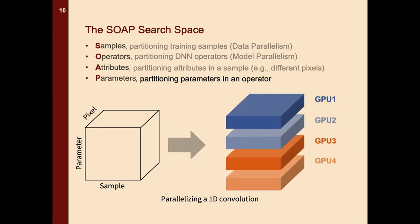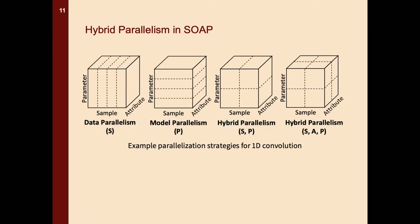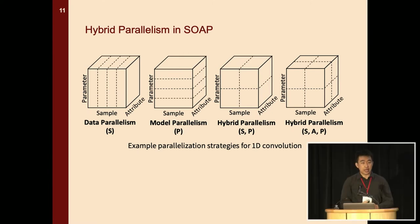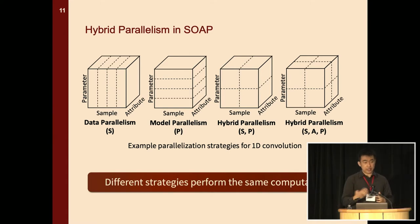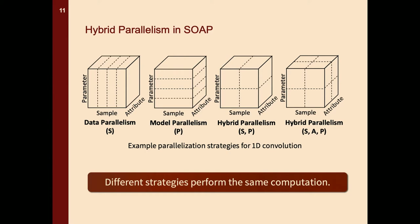The last dimension is the parameter dimension, which partitions parameters within an operator on different GPU devices. As a result, different GPUs end up computing gradients for disjoint subsets of parameters, which can help you avoid parameter synchronization. In SOAP, we also consider hybrid parallelism using any combination of the SOAP dimensions. In our design of the SOAP search space, it is guaranteed that different strategies will perform the exact same computation, so you can get the same model accuracy regardless of which strategy you choose. This allows us to focus on runtime performance.